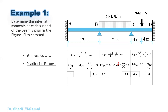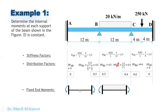Step two is calculating the fixed end moments. The fixed end moments depend on the support conditions and loads for each span. For span AB, there is no load, so the fixed end moments are both zero. The formula used depends on whether the span is fixed-fixed or fixed-pin, and on the type of loading.